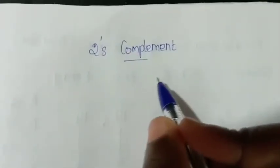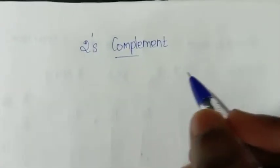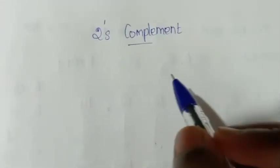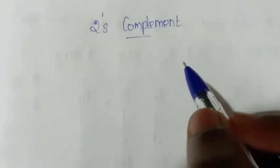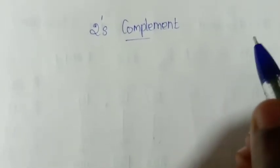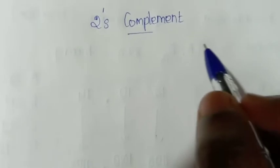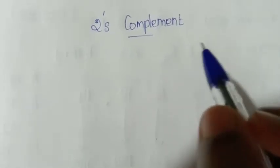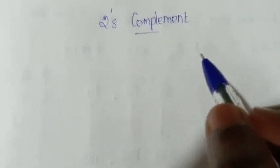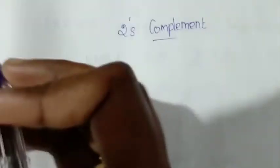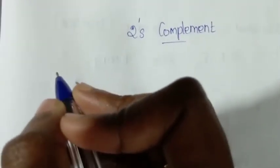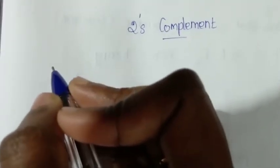Two's complement. Two's complement of a binary number is obtained by adding one to its one's complement. Then you can find the two's complement. How to convert two's complement.